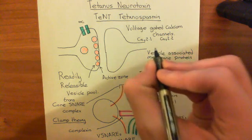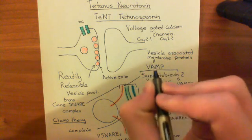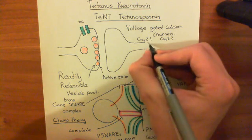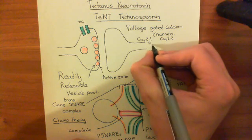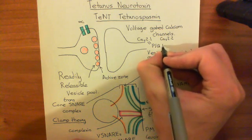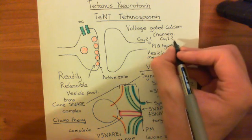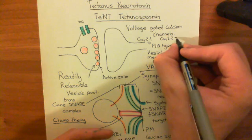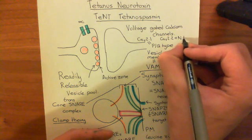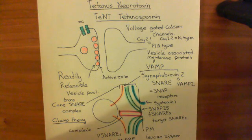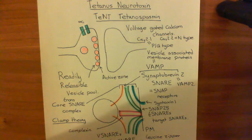The way you name the voltage-gated calcium channel is determined completely by which alpha-1 subunit it uses. If it uses the CAV 2.1 gene, you name it a PQ-type voltage-gated calcium channel. If it uses the CAV 2.2 gene, then you name it an N-type voltage-gated calcium channel. The alpha-1 subunit is the most important one — it is the pore-forming unit, what actually allows calcium to move through.